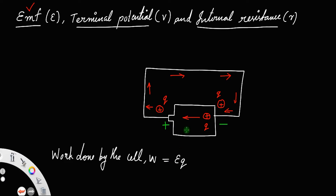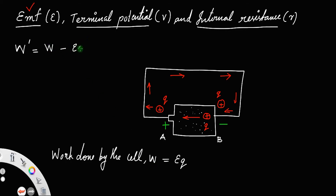But the question is: is all of this work used to move the charge from point B to point A? Definitely not, because there are certain particles inside every cell, and the charge has to overcome the resistance offered by these particles. So the useful work done, W dash, will always be less than W — it equals W minus some energy loss due to the opposition of these internal particles.